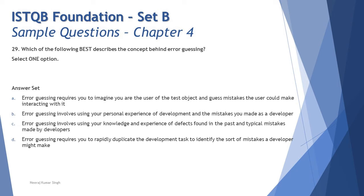Option C says: error guessing involves using your knowledge and experience of defects found in the past and typical mistakes made by developers. There's a key difference from option B — here we are not talking about what you did as a developer, but predicting what a developer can go wrong with. Two major parameters are highlighted: your past experience, and knowledge of typical defects which a product generally comes with. This is the valid basis for applying experience-based techniques including error guessing.